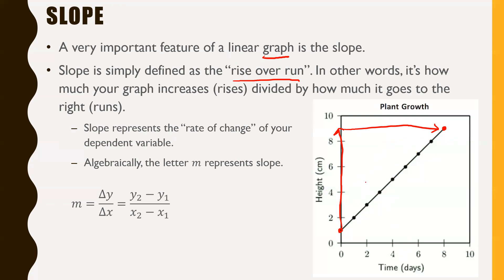Slope can have units. In our example we had centimeters and days, so that would be centimeters per day. Slope represents the rate of change of your dependent variable — in this case, because our dependent variable is height, this tells us our rate of change of height, or how fast our height is changing over time.